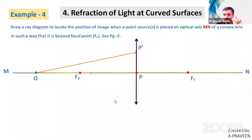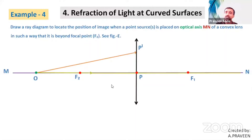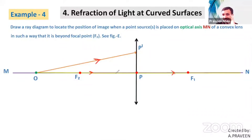The ray starting from the object O and passing through the optic center along the principal axis remains undeviated after refraction — that first ray is completed. But to find the position of the image we require at least two rays. The second ray is OP'. We need to determine its behavior after refraction, which we don't know directly.